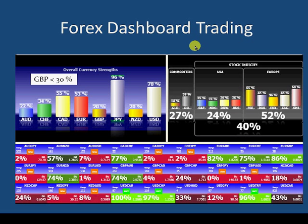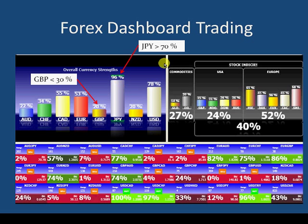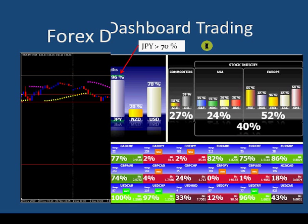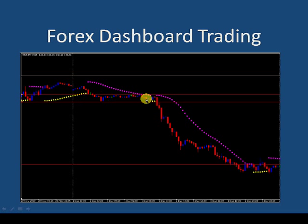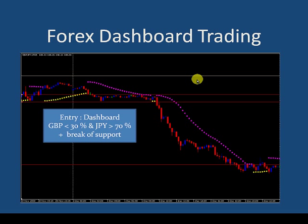When trading strengths and weaknesses, on the weak side we like to see values below 30%. On this particular day the pound was sitting at 20%. On the strength side we like to see values above 70% — the Japanese yen was sitting at 96%. On the corresponding chart, a nice channel had been set up and we were looking for a break of support. Sure enough, that break came and we had a lovely move down.